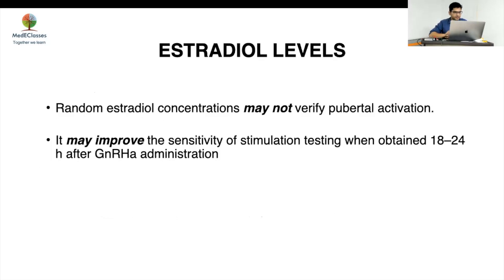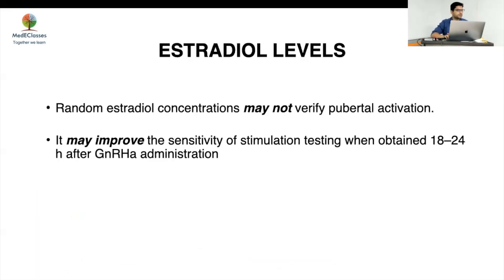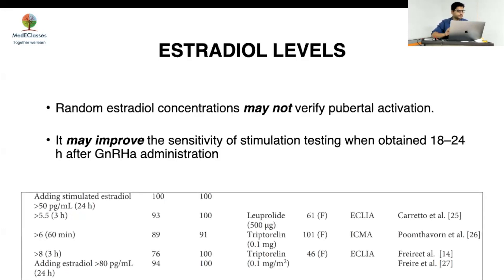Regarding estradiol levels: random estradiol levels are not helpful. However, if measured after GnRH administration and checked at 18–24 hours, a level of more than 50 pg/mL has 100% sensitivity and specificity and can aid in the diagnosis of CPP. That said, a level above 50 is very high — breast development would already be apparent clinically. The LH remains the best single marker, ideally a pooled sample.